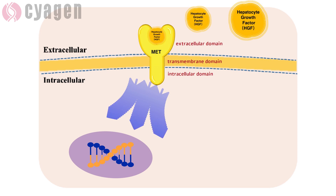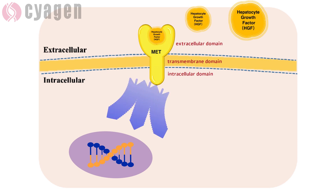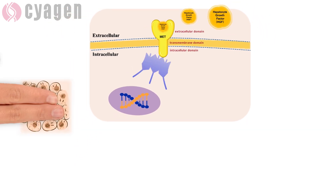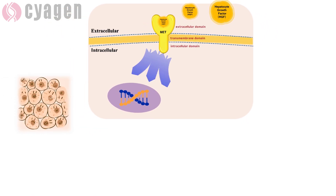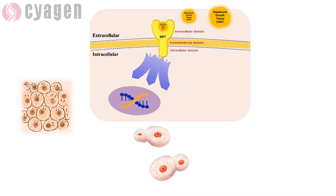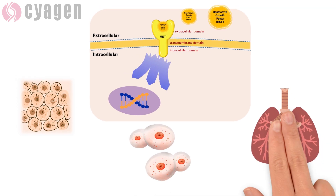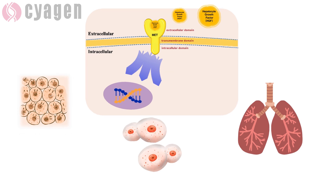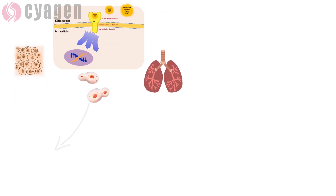The combination of HGF and c-MET activates MET and then activates numerous downstream signaling pathways. Therefore, MET exerts its effects of promoting cell proliferation, cell growth, cell migration, invasion, and angiogenesis, playing a key role in normal tissue development and tumor progression.